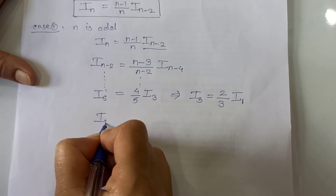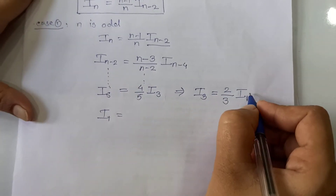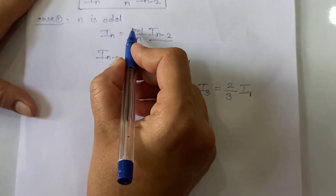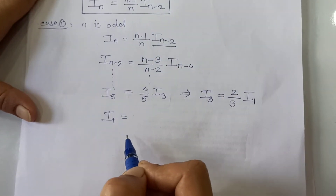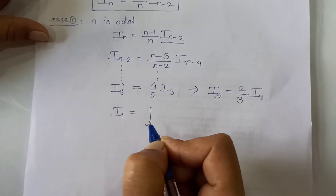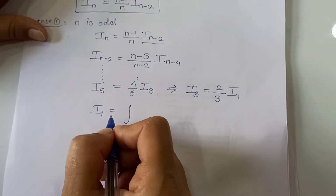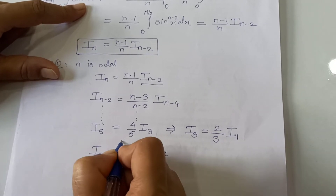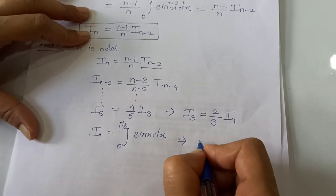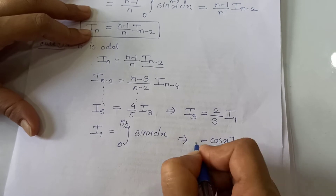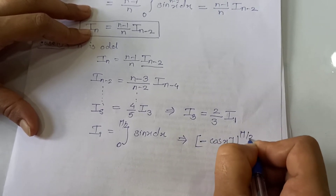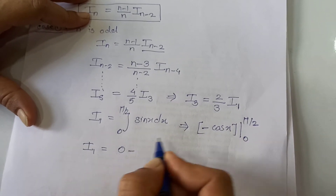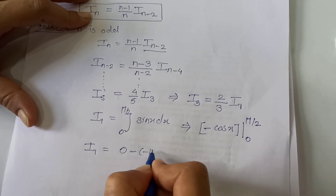Now let's evaluate I₁. We do not apply the reduction formula here because putting n=1 gives (1−1)=0 in the numerator. Instead, I₁ is the integration of sin x dx from 0 to pi by 2, which equals [−cos x] from 0 to pi by 2. Putting the upper limit: cos(pi/2) = 0; putting the lower limit: −cos(0) = −1, so minus of minus 1 is plus 1. Therefore I₁ = 1.